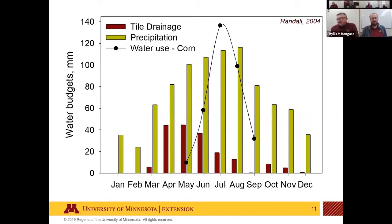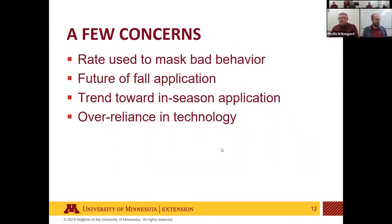This chart by Giles Randall shows that the yellow bars are precipitation, red bars are drainage from the soil profile, and the black line is corn growth. Once corn gets really actively growing, the amount of water draining from the profile decreases significantly. The risk of losing nitrogen is primarily in the April-May period before corn gets growing. By mid-June or so, the risk of nitrogen loss through leaching goes down quite a bit.